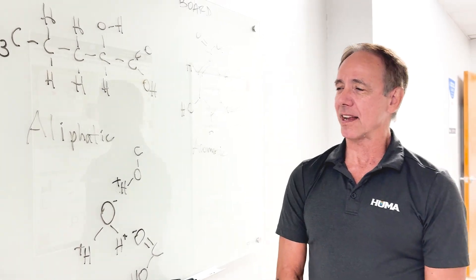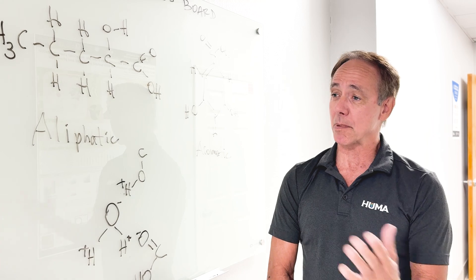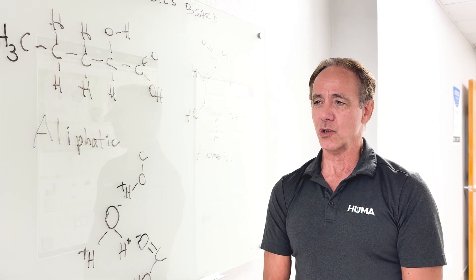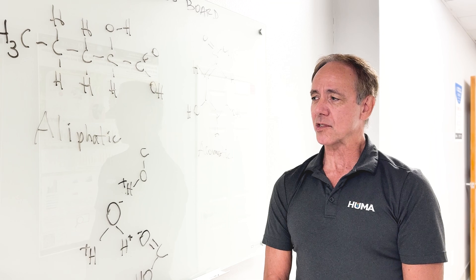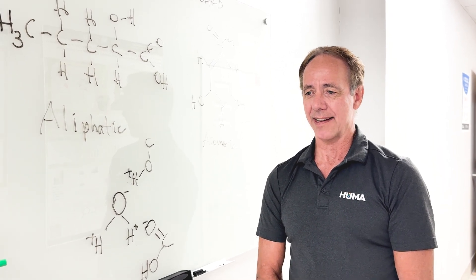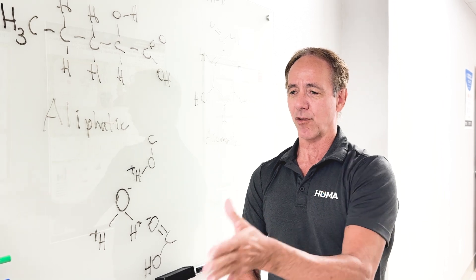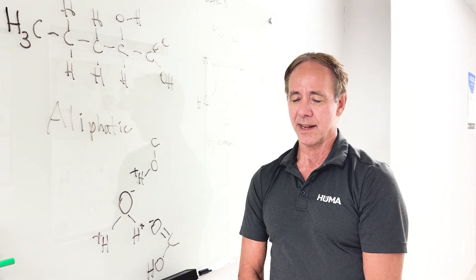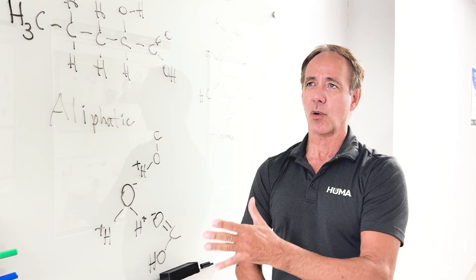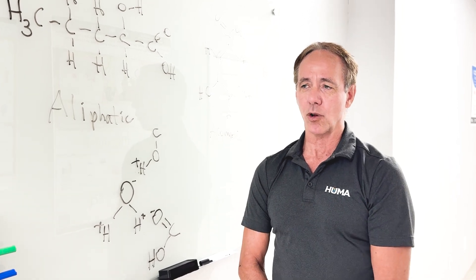Another difference that is brought up and used to be brought up more than it is now is that humic molecules are larger than fulvic molecules. And this is only true to a certain extent. If you do a mass spec analysis, which gives you the formula for all the molecules that are present in humic and fulvic acids, we grade them or we weigh them in terms of what are called daltons.